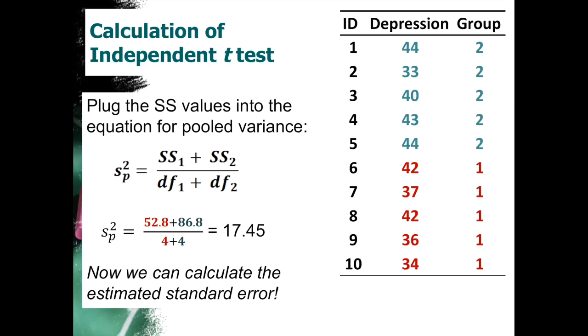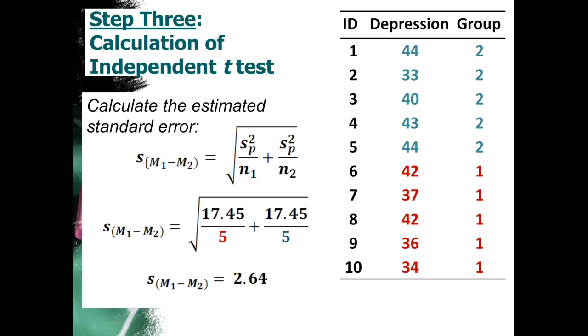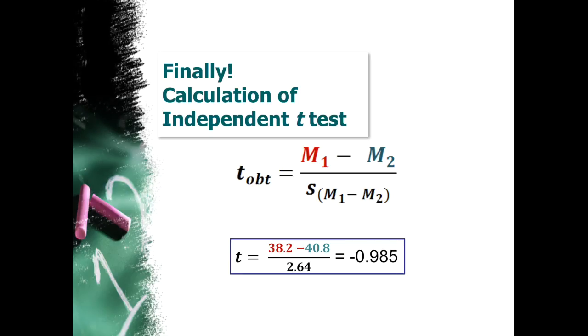Now we can calculate the estimated standard error. Okay. So estimated standard error is the square root of pooled variance divided by the sample size for the first group plus pooled variance divided by the sample size for the second group. Or 17.45 divided by 5 plus 17.45 divided by 5. So we get estimated standard error of 2.64. And that's going to be on our denominator.